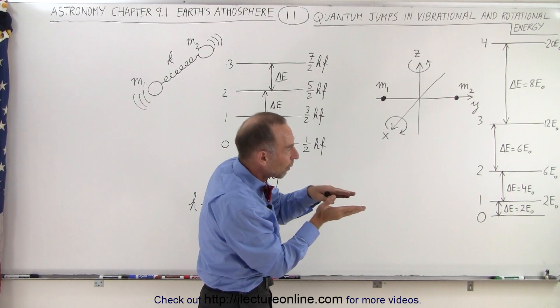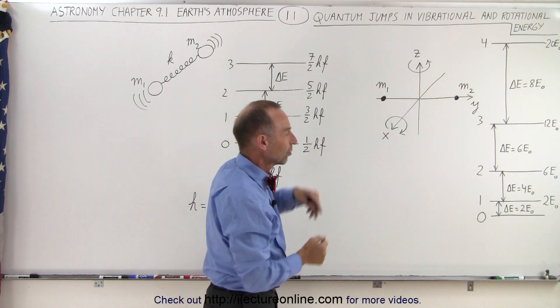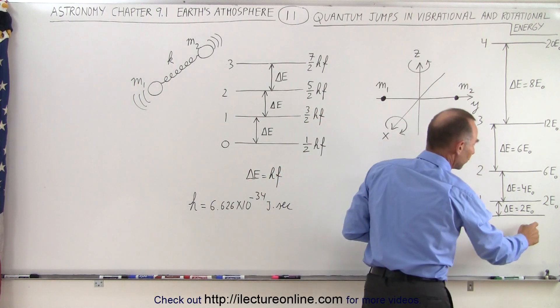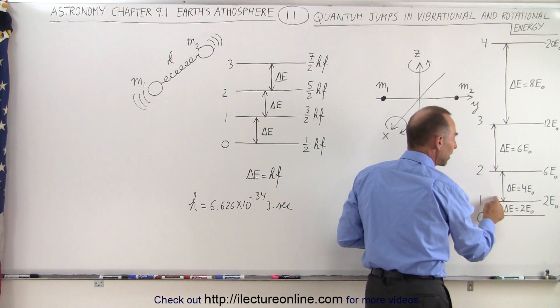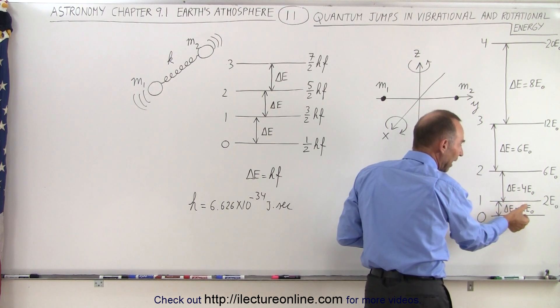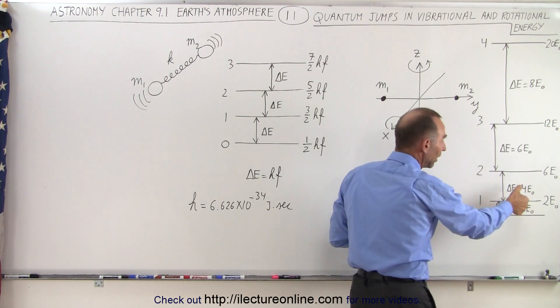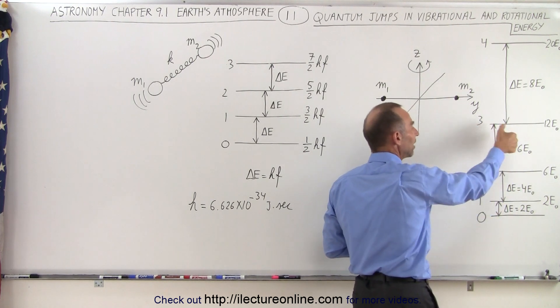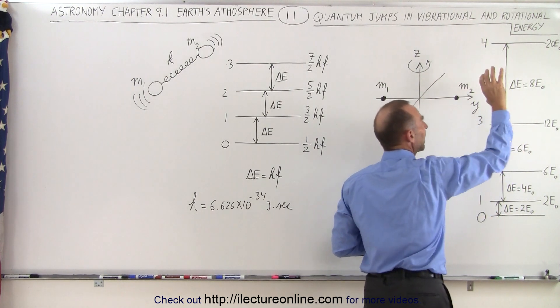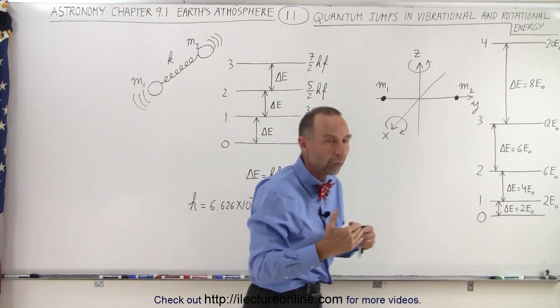So let's say that we have a certain base state. To go to the next higher state, that increases two times whatever the base energy is. Then to go to the next state, that will require four times the base energy. To the next state, six times the energy. To the next state, eight times the energy, and so forth.